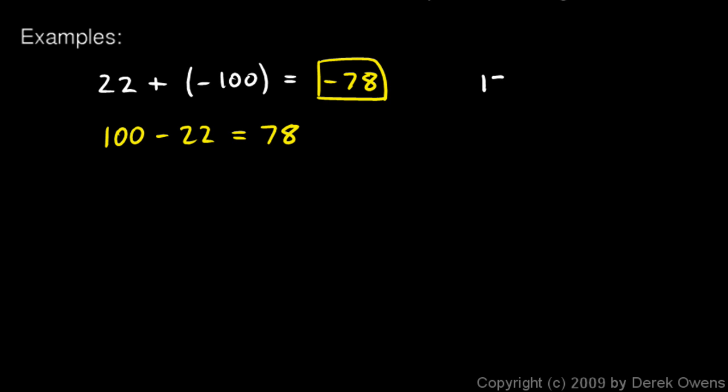Okay, the next example is 13 plus negative 8. Well, again, I'm going to ignore the negative signs, and I just think, okay, what's the difference between 13 and 8? So 13 minus 8, well, it's 5. And then I look at these numbers, the 13 and the 8. Which of these numbers is bigger in an absolute sense? Well, the 13 is bigger, and in my original numbers, the 13 is positive, so my result is positive. So I don't stick a negative sign onto the answer, 5 is my answer.